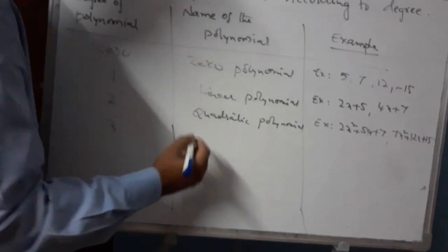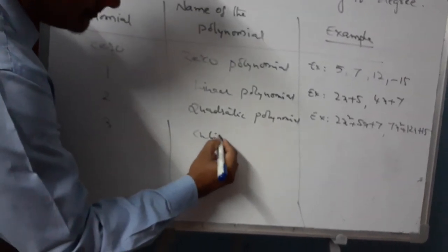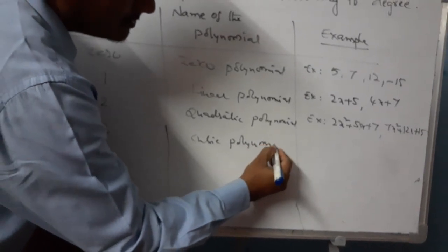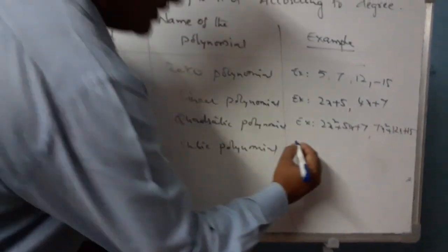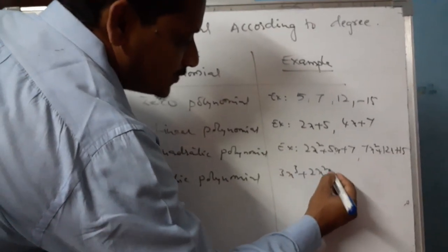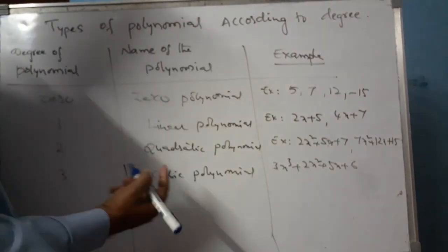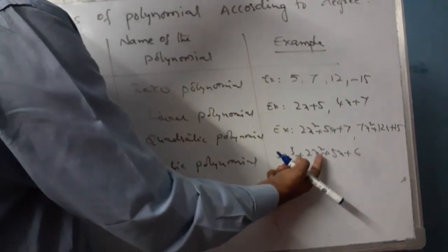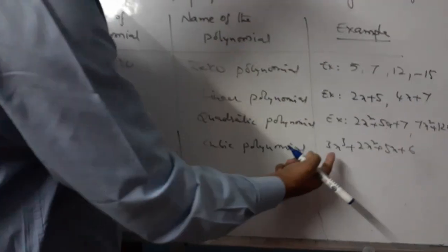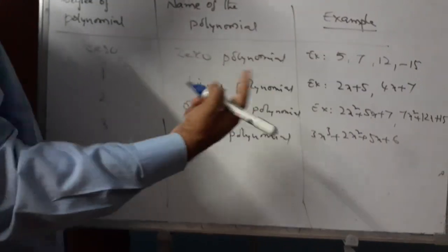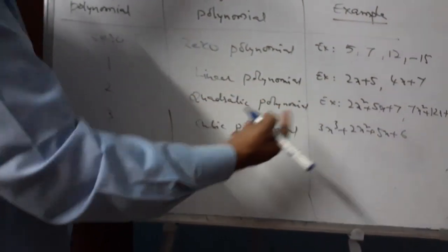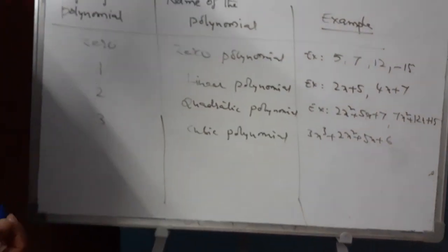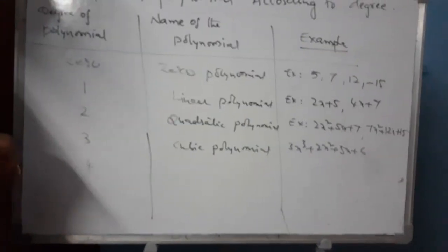If the degree of the polynomial is 3, the name of the polynomial is cubic polynomial. Example: 3x cubed plus 2x squared plus 5x plus 6. Here x cubed means x to the power of 3, which is the highest power. So the degree of this polynomial is 3, and it is known as the cubic polynomial.